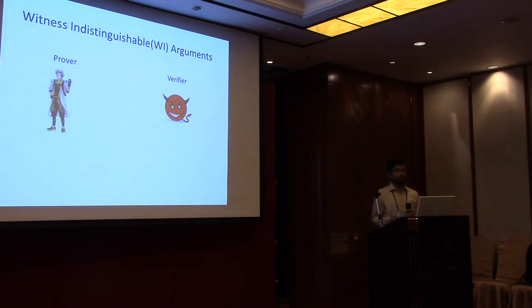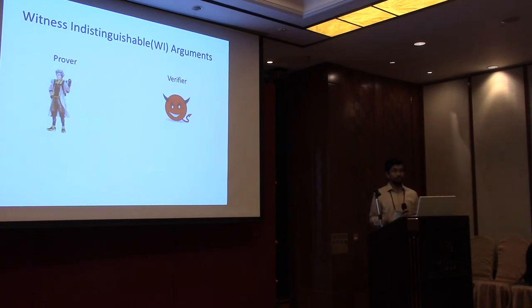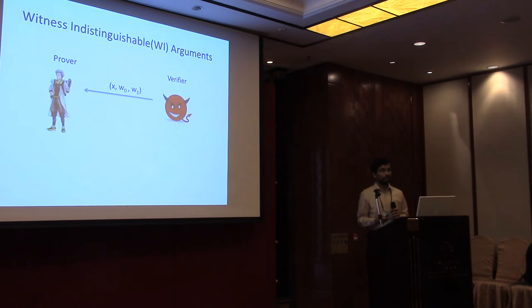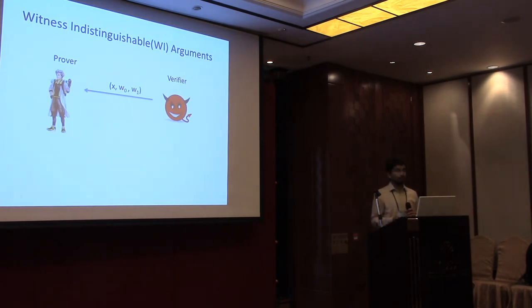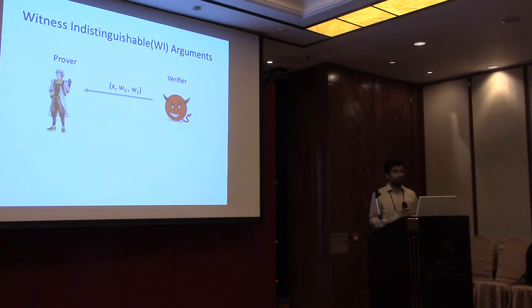Let me briefly mention what the witness indistinguishability (WI) argument is. It is similar to a zero-knowledge argument system — we have a prover and a verifier — but the security requirement against a malicious verifier is slightly different. The verifier picks some statement x in the language and two witnesses w0 and w1, each of which can independently certify that x is in the language.